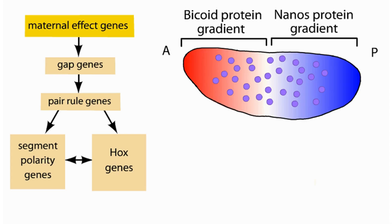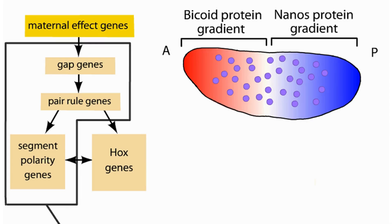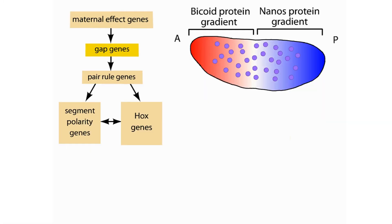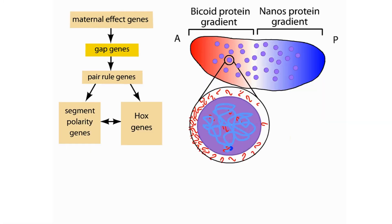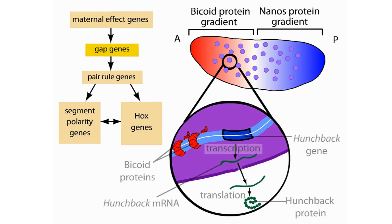The protein gradients are important because they regulate the embryo's own developmental genes. The embryo contains a number of genes that control the fly's segmentation pattern. These genes, called segmentation genes, operate in stages. Bicoid and nanos proteins regulate genes in the first stage, the gap genes. The bicoid protein is a transcription factor that enters nuclei at the anterior pole and triggers the transcription of a gap gene called hunchback.